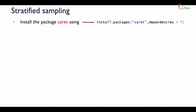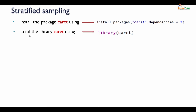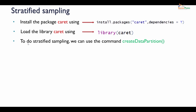To use `createDataPartition`, first we need to install the package called caret using `install.packages`, specifying the package name within double quotes and adding `dependencies = TRUE` so that all associated dependencies are also downloaded. Having done that, load the library using `library(caret)`. Now we are ready to use the `createDataPartition` function.